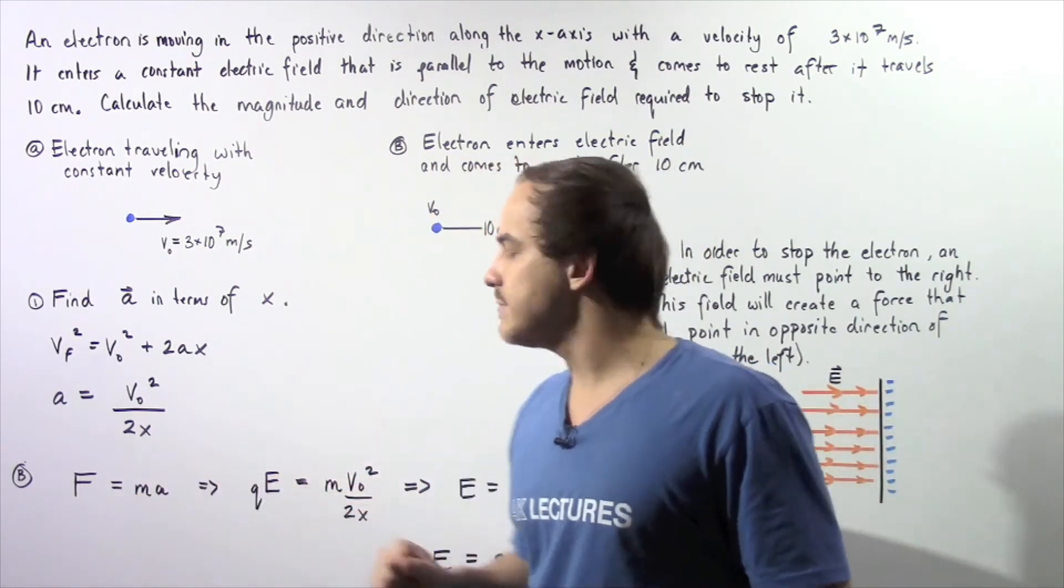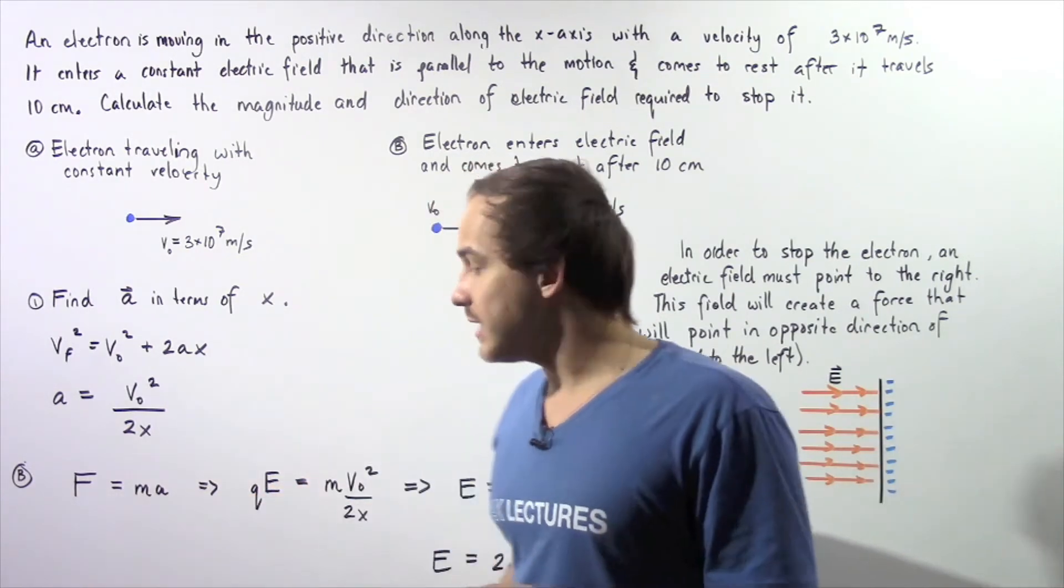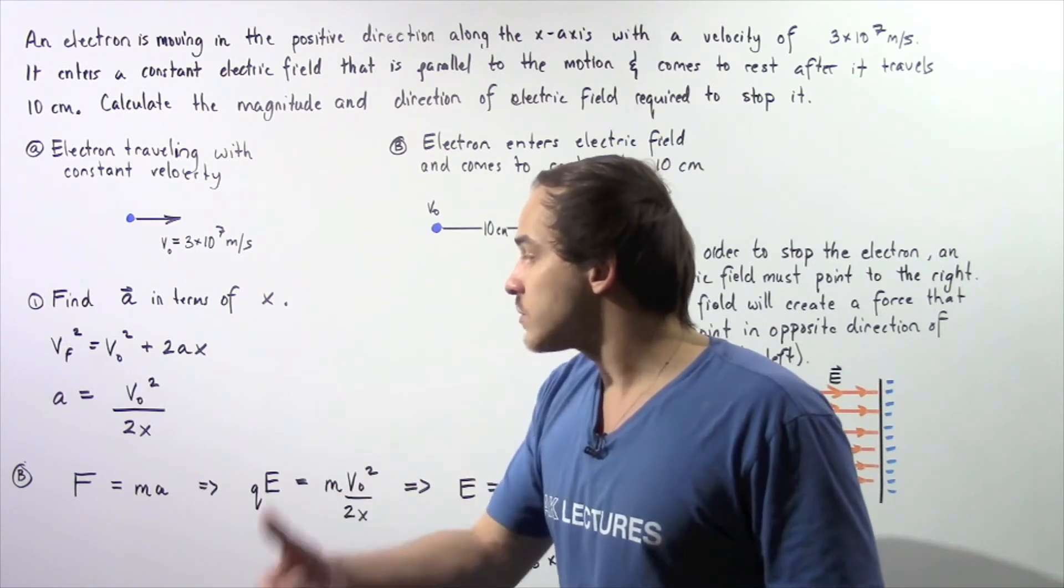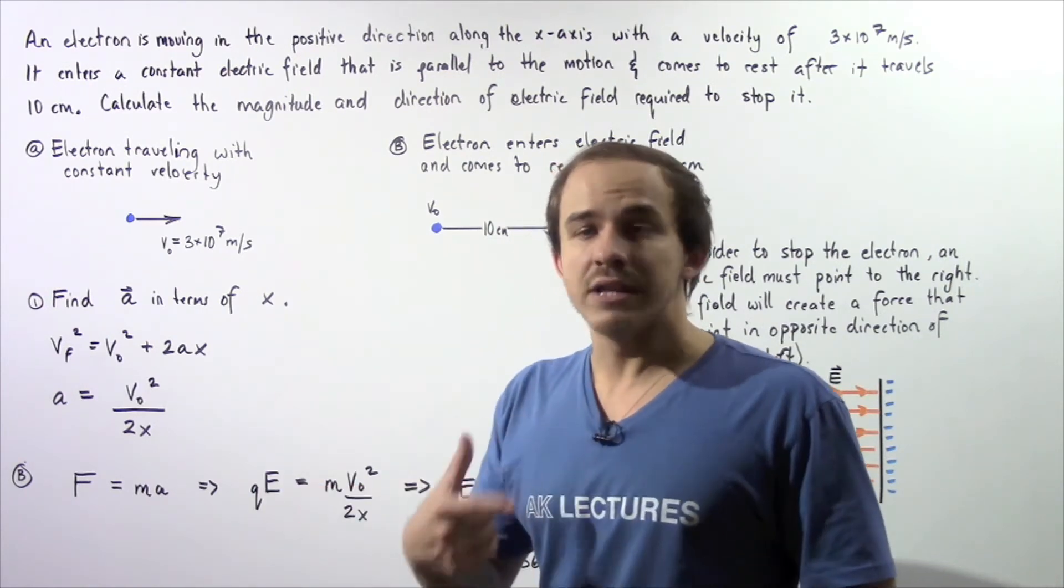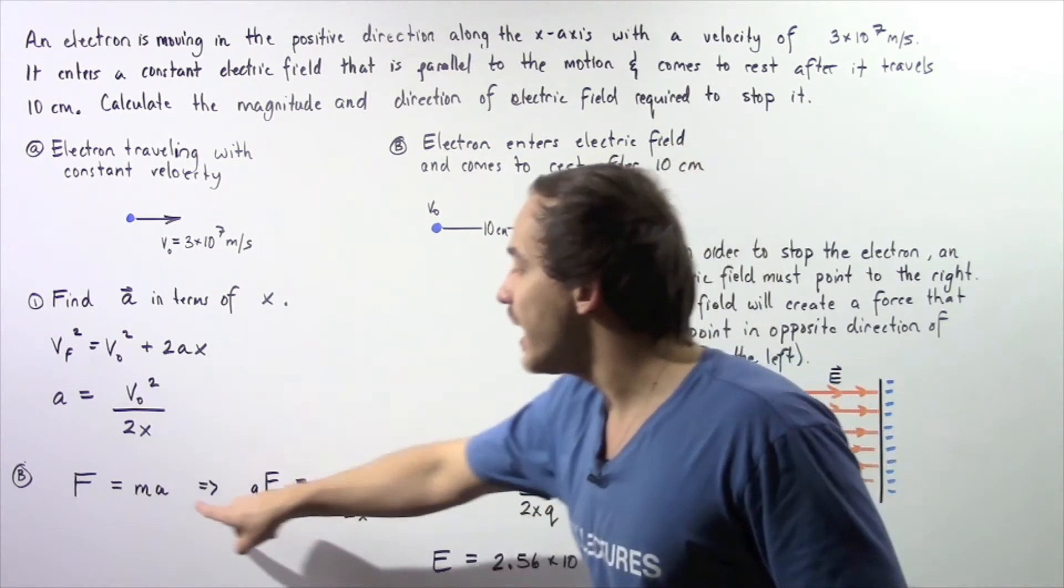Force equals ma. The force as a result of the field equals qE, where q is our charge of the electron and E is our electric field. This equals mass multiplied by a.